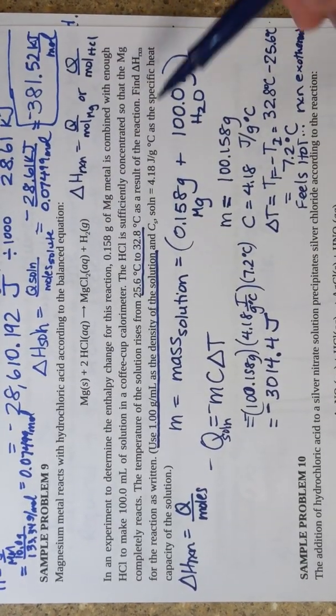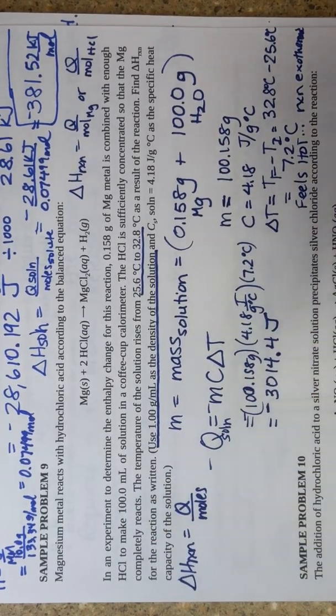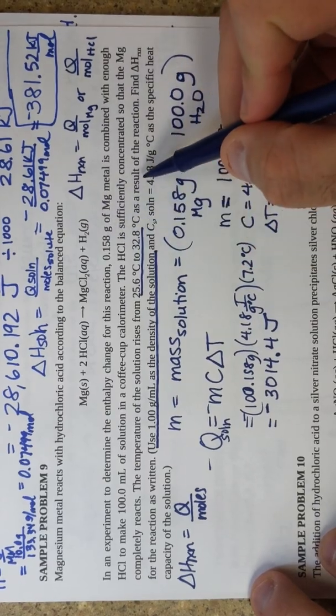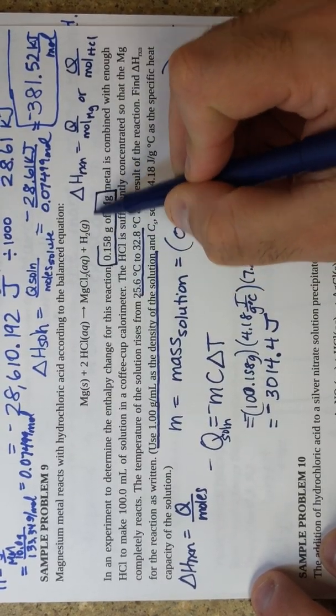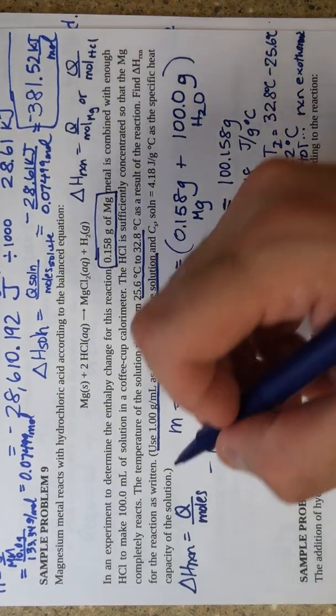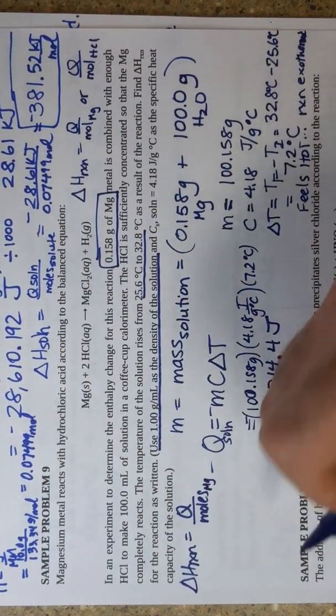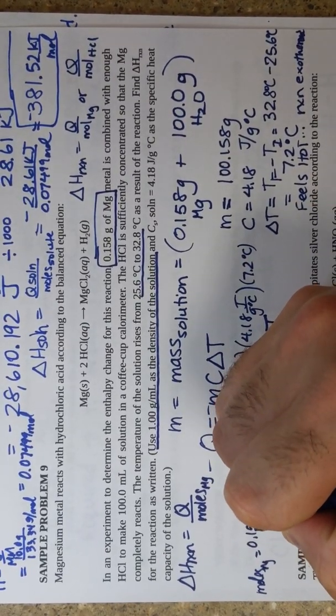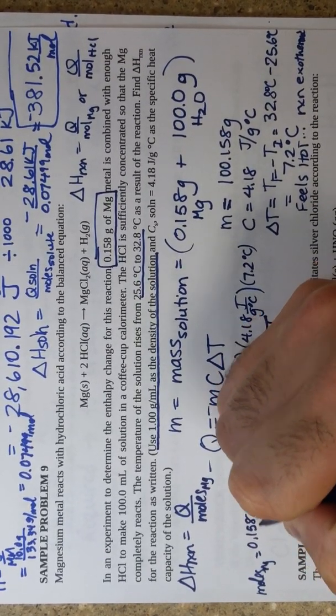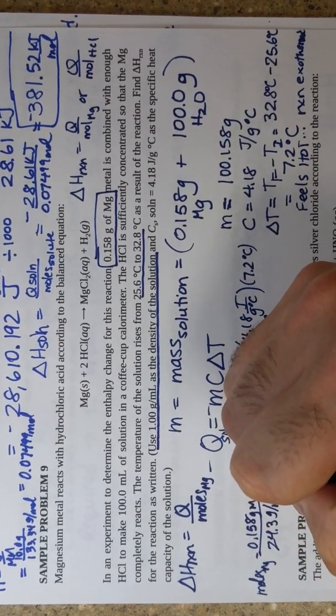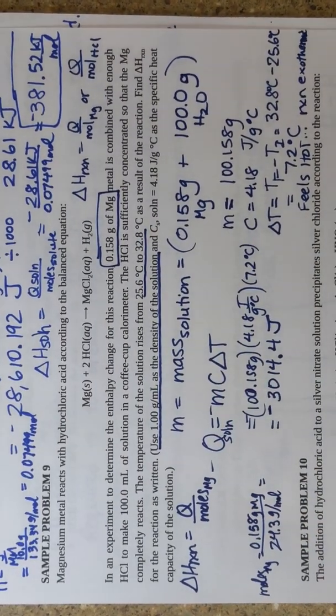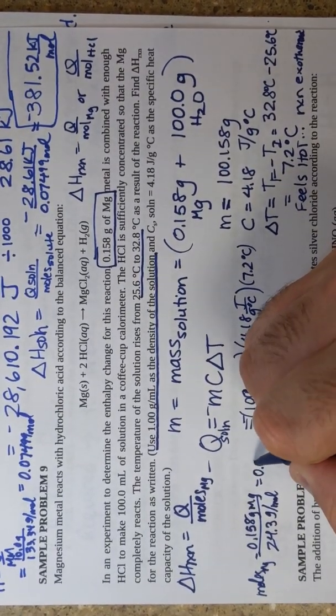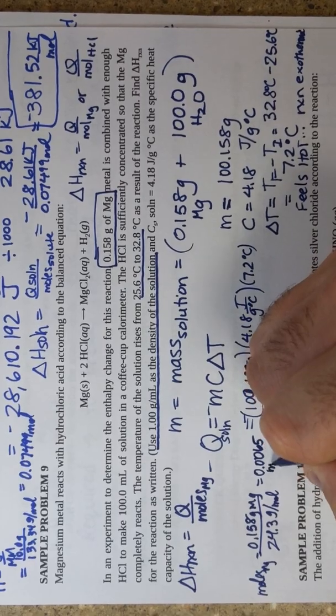The only thing I got is that I have 0.158 grams of magnesium. I'm going to do Q over moles of magnesium. To get moles of magnesium, you're going to do 0.158 grams of magnesium divided by the molar mass of magnesium, which is 24.3. You get 0.0065 moles of magnesium.